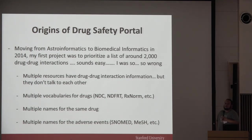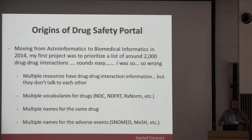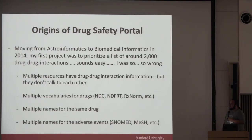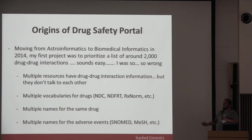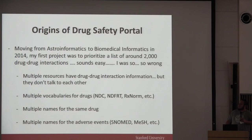Secondly, there are multiple vocabularies for drugs — at least in the U.S. we have NDC codes, NDFRT codes with a string and a code, RxNorm with multiple levels, and so on. On top of that, there are multiple names for drugs: clinical name, commercial name, variants. And once you figure out the drugs, you have multiple names for adverse events that can be either SNOMED codes, Mesh codes, or others.